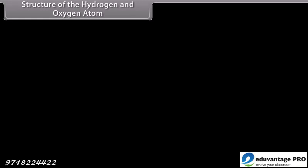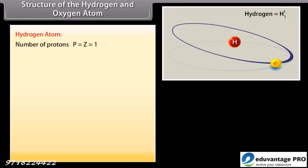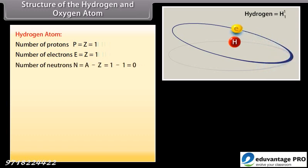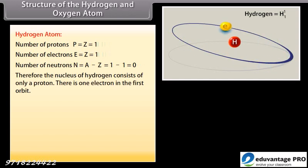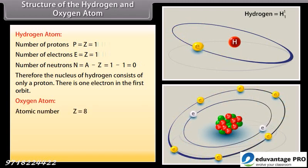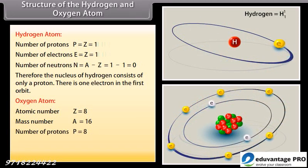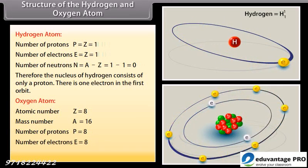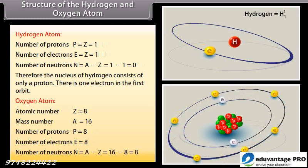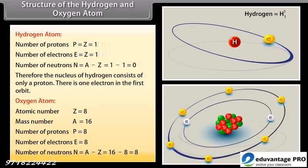Structure of the hydrogen and oxygen atom. Hydrogen atom: Number of protons P is equal to Z is equal to 1. Number of electrons E is equal to Z is equal to 1. Number of neutrons N is equal to A minus Z which is equal to 1 minus 1 which equals 0. Therefore, the nucleus of hydrogen consists of only a proton. There is one electron in the first orbit. Oxygen atom: Atomic number Z is equal to 8, Mass number A is equal to 16, Number of protons P is equal to 8, Number of electrons E is equal to 8, Number of neutrons N is equal to A minus Z which equals 16 minus 8 which is equal to 8.